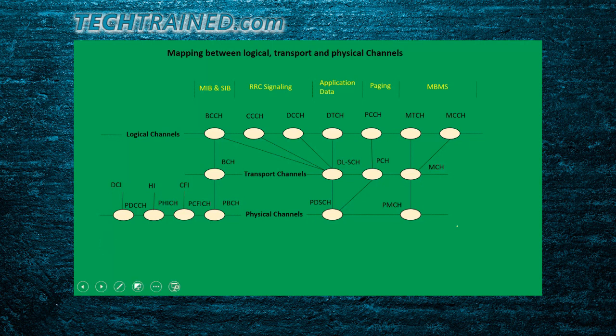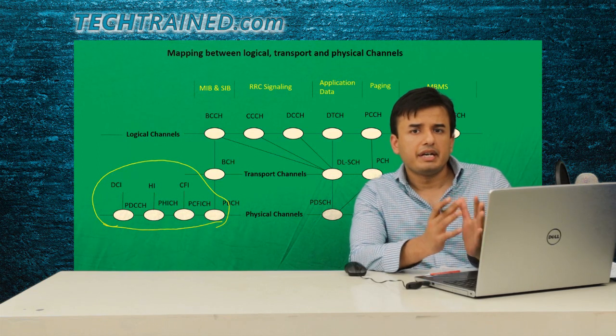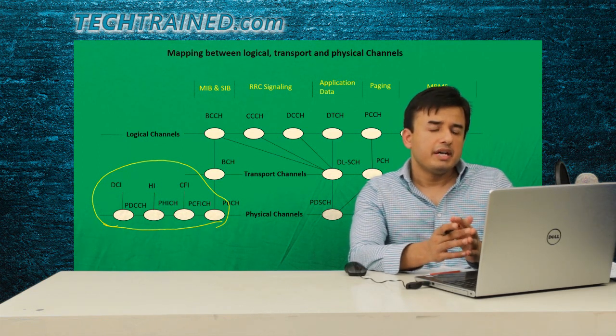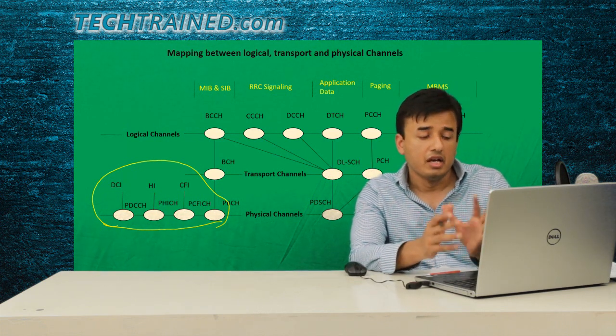Certain channels have no arrows because the MAC scheduler provides new information to them after every 1 ms TTI — information on them could be new, so they are always active on the physical channel. The structure of these channels is key to understanding the downlink interface. In coming videos, we'll discuss how these channels are used when you power on your phone — but first we need to understand the uplink logical, transport, and physical channels as well.